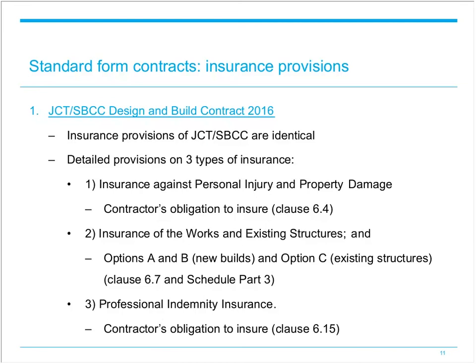Under clause 6.15, the contractor is obliged to take out professional indemnity insurance with limits no less than those stated in the contract particulars, and to maintain such insurance until the expiry of the period stated in the contract particulars from the date of practical completion of the works.